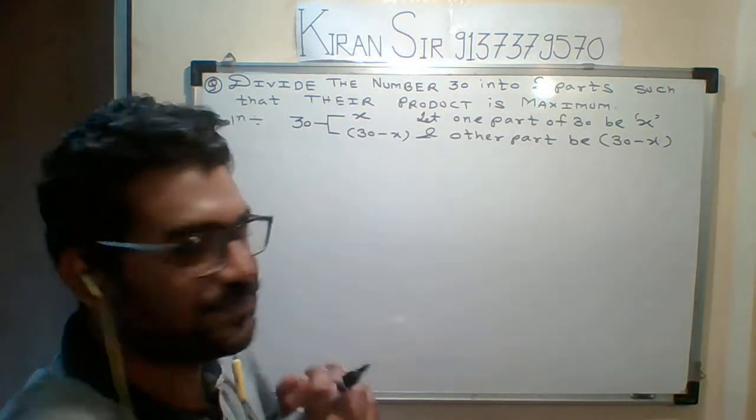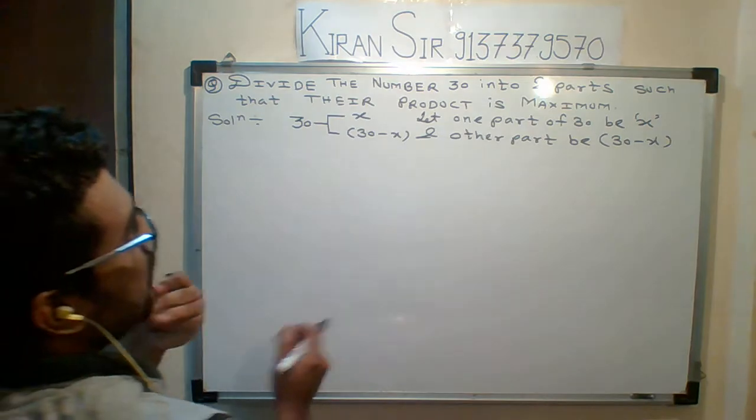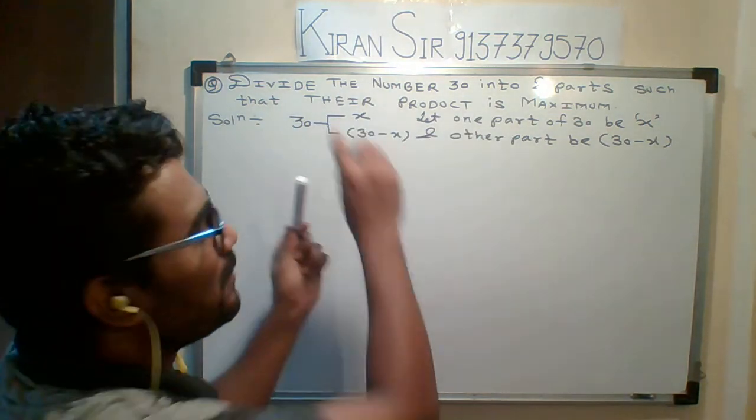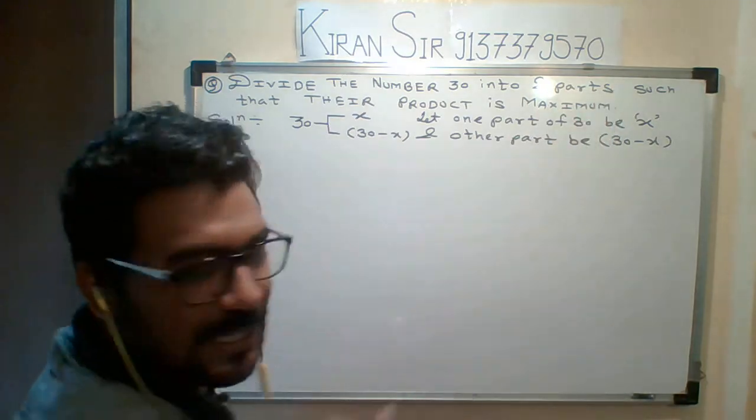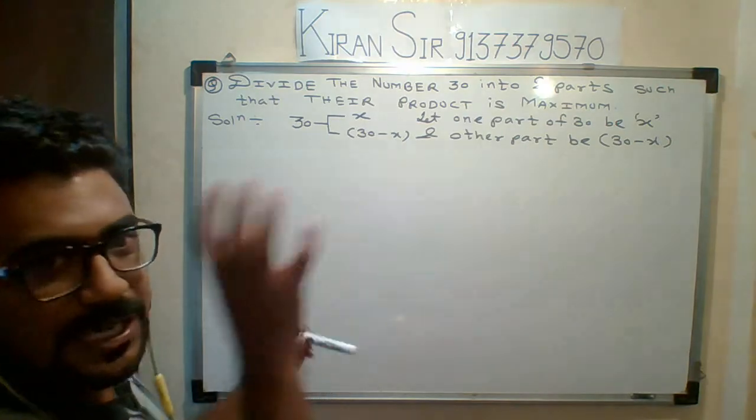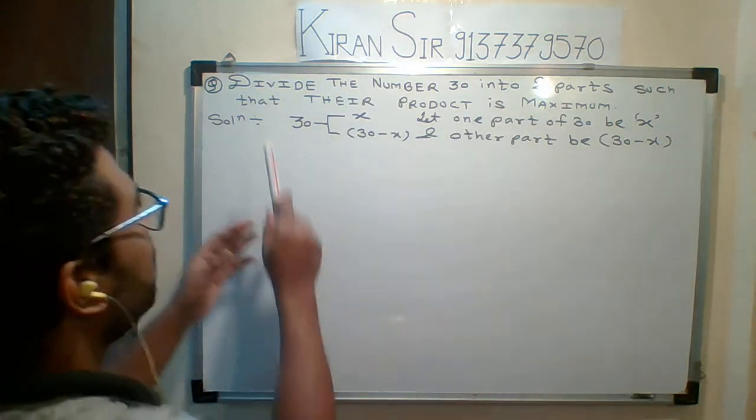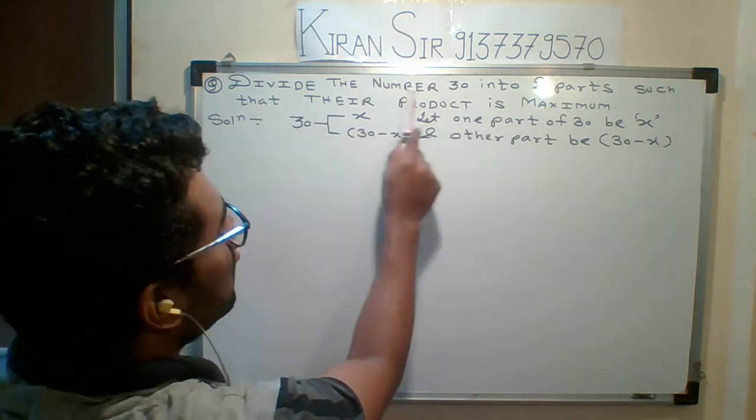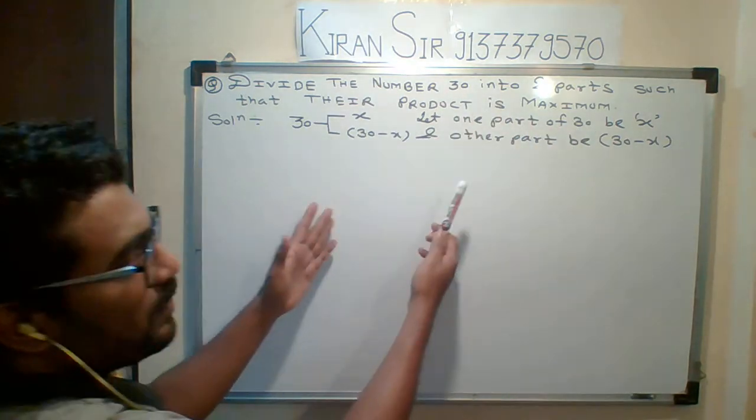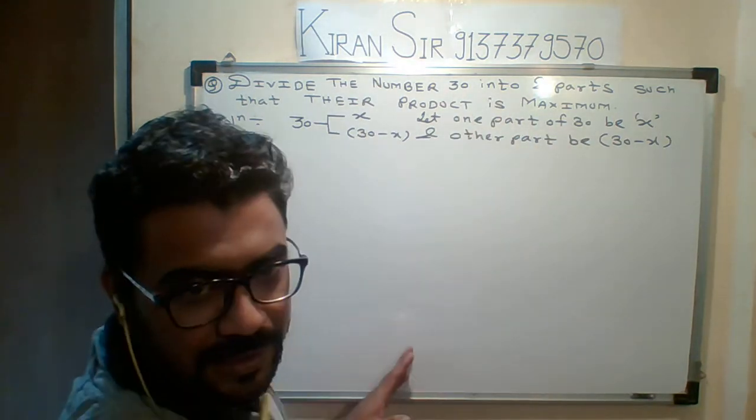So we got it, we understood or we considered two parts of 30. Now next question, you can see in the question sometimes I am writing in capital letter, small letters, because I have to concentrate on that particular part. First, what part was concerned about: divide the number 30 into two parts, which I have done.